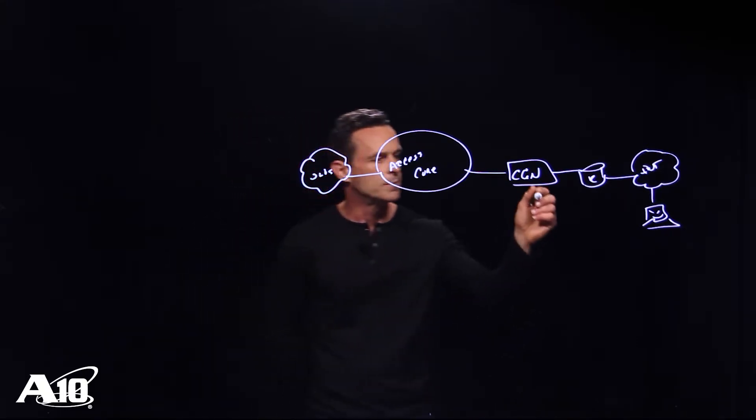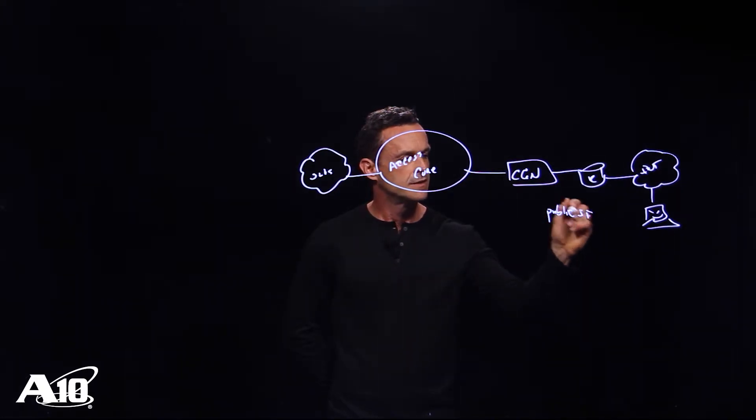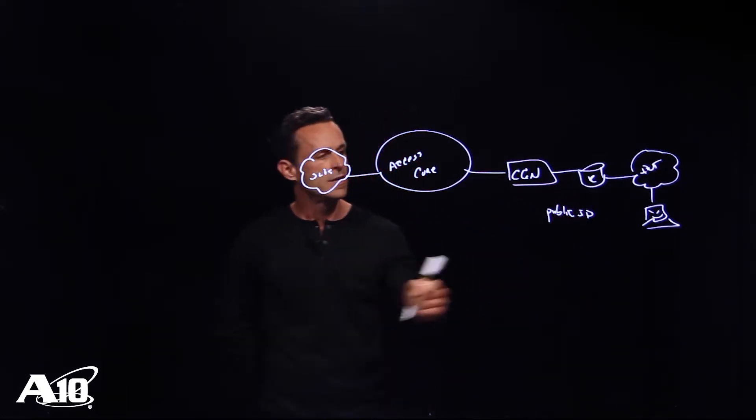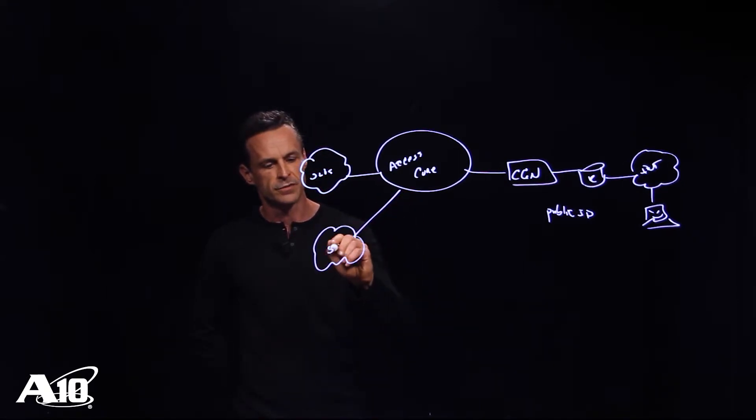One is that we now have moved the public IP address that typically is assigned to our subscriber onto the carrier grade NAT device, and now we are overloading that address with multiple subscribers.